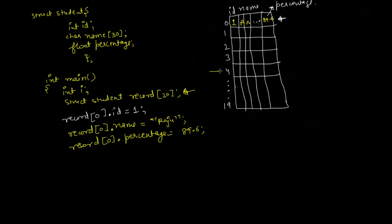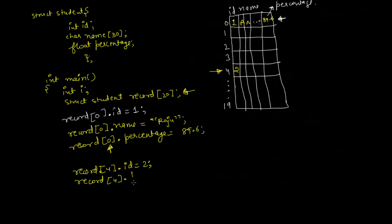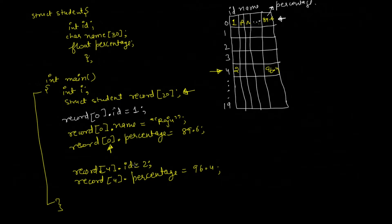If you want to access index location 4, you just write 4 in the brackets. You can write record[4].id = 2, meaning 2 will be stored there. You can also write record[4].percentage = 96.4, so 96.4 will be stored at that location. This is how you can declare a structure and an array of structures and store data within it.